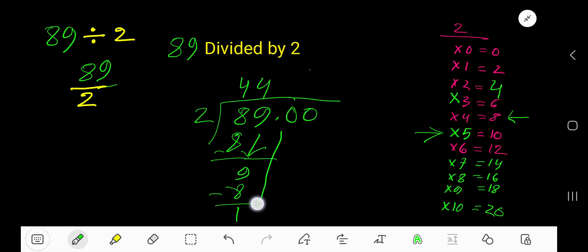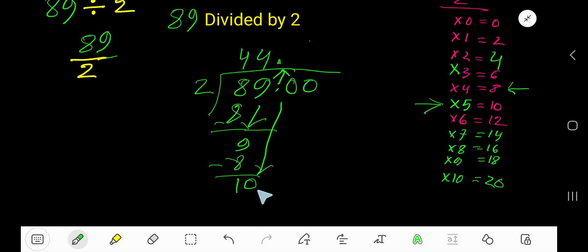Bring down the first zero. Before this zero there is a decimal. The decimal must come to the quotient directly. 2 goes into 10 how many times? 5 times. Write 5. 5 times 2 is 10, subtract 0. So 44.5 is your answer.